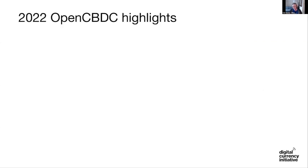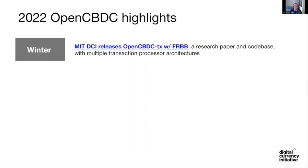Let me walk you through a bit more in depth what we've been doing this year and what we've released. This winter — in February — we released our initial body of work in the form of OpenCBDC-TX, which is a free and open source software repository on GitHub that includes two transaction processor architectures. This was also released along with our full whitepaper that includes everything from security arguments down to the actual details of how this is built and tested.